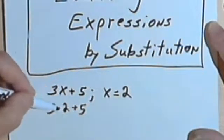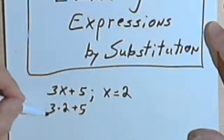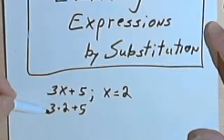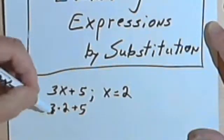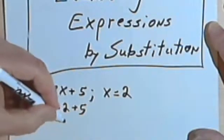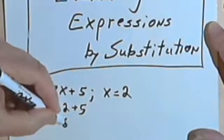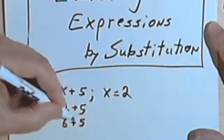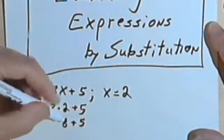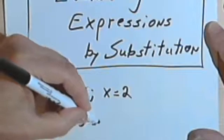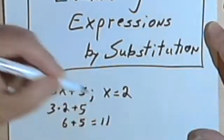And then we'll just evaluate this using the rules that we have for the order of operations. So 3 times 2 is 6, and 6 plus 5 is 11.